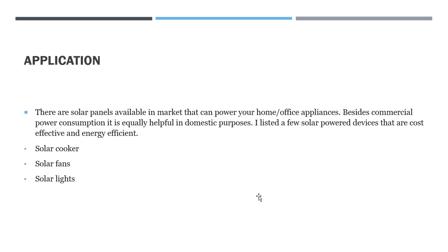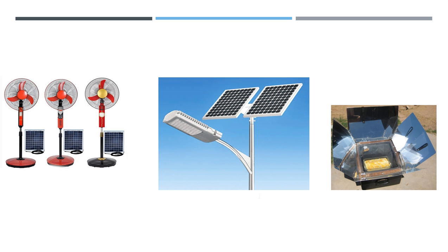Now let's look at the application part of solar energy. You can use solar not just in industrial settings but also for your residential appliances — home and office appliances, mostly for domestic purposes. One use would be where you cook food, harness energy for your AC fans, and power lights in your house using solar lights. I've shown a solar fan here — you can put a solar panel outside and use your solar fan inside the house without consuming any electricity from your utility.